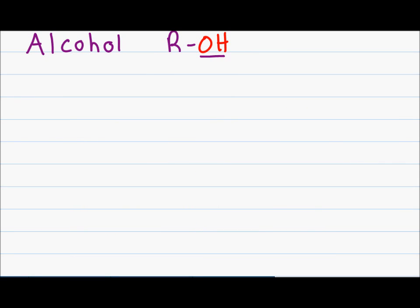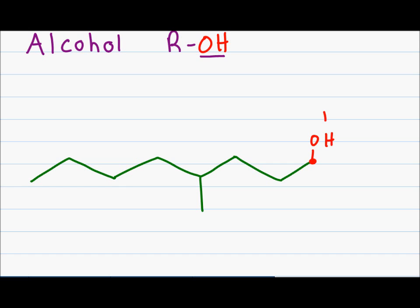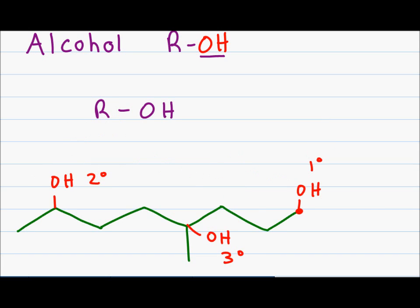An alcohol is classified by the hydroxyl or OH group attached somewhere on the carbon chain. An alcohol is defined by the type of carbon that it is attached to. If I put an OH group on the end of my chain, the oxygen is attached to a primary carbon, which makes this a primary alcohol. If I put my OH on a secondary carbon, the alcohol is defined as a secondary alcohol. And if I put my hydroxyl group on a tertiary carbon, I will have a tertiary alcohol. Since the alcohol is attached to the carbon chain by only single bonds, this will be sp3 hybridized, which is tetrahedral in shape, with a bond angle of 109.5 degrees.